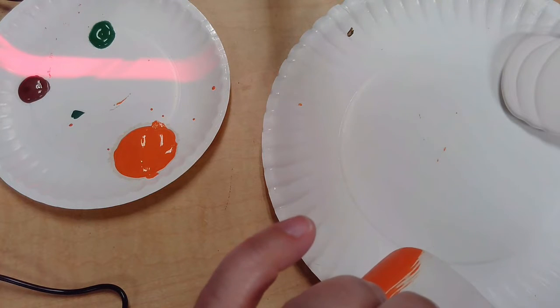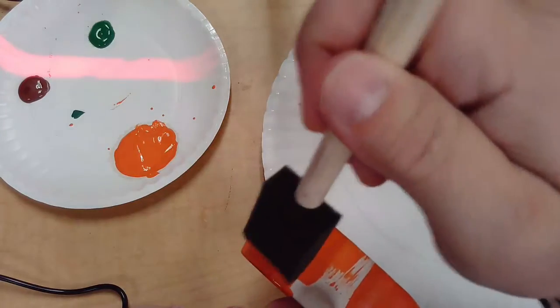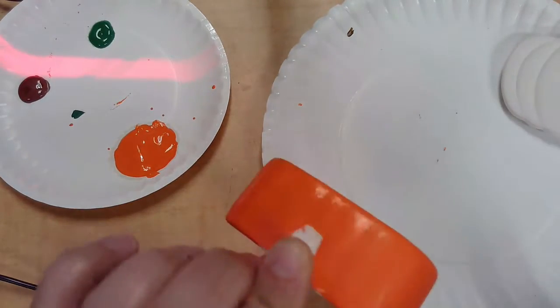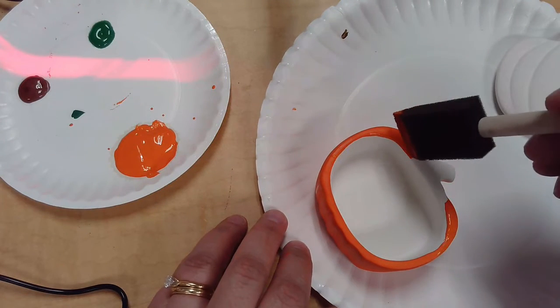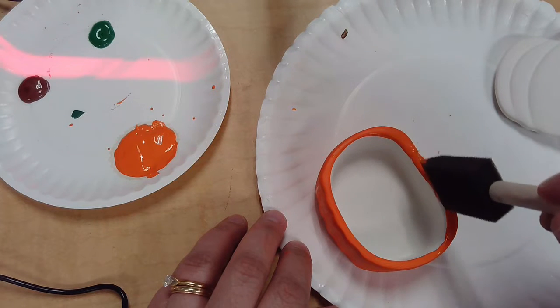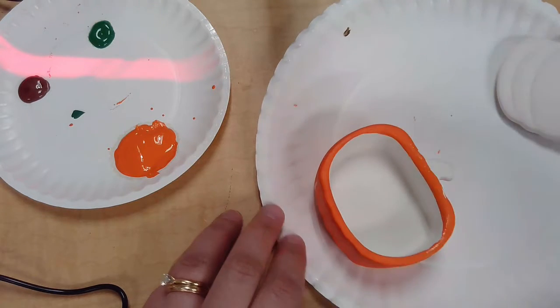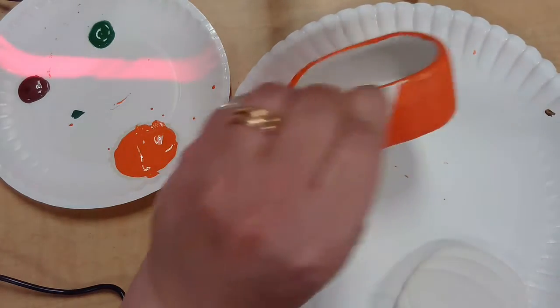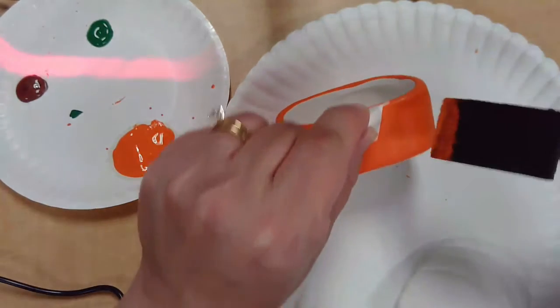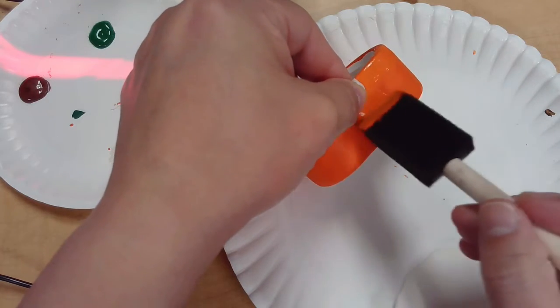Going all the way around here. I'm using the edge of my brush to get the edge of the top of the pumpkin there. And trying not to get it all over my fingers. This is always a challenge when I paint.